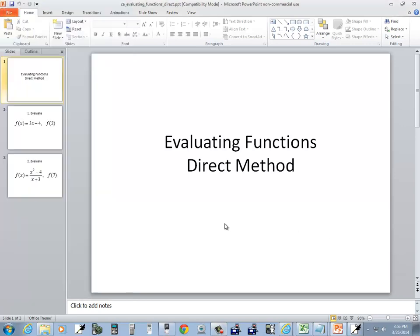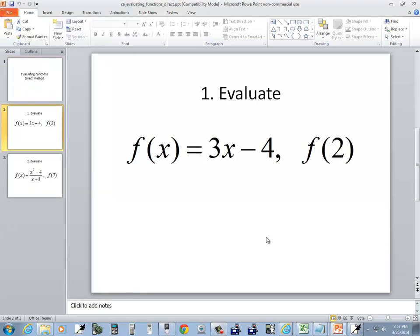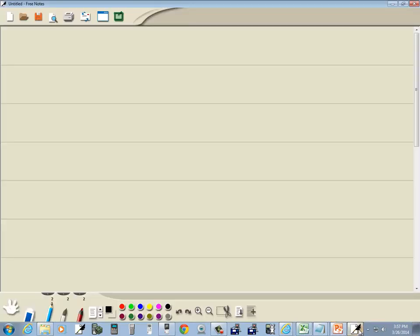Let's take a look at evaluating functions using the direct method. This is where we use direct substitution. We've got f(x) = 3x - 4.